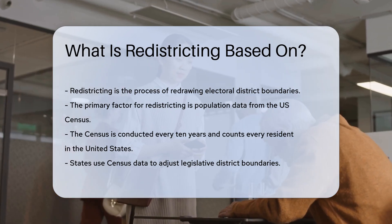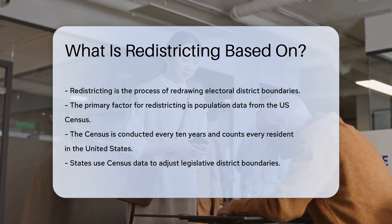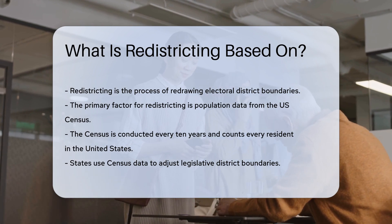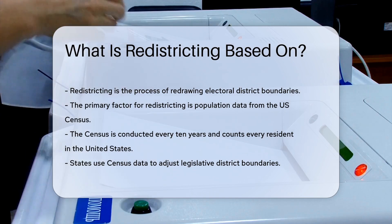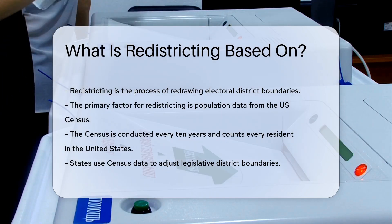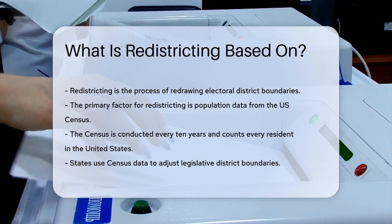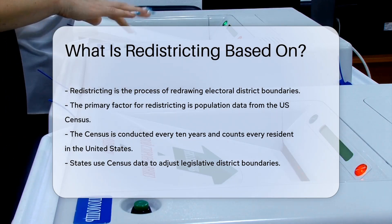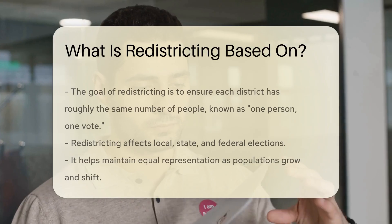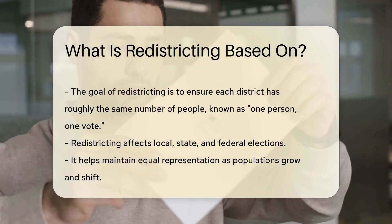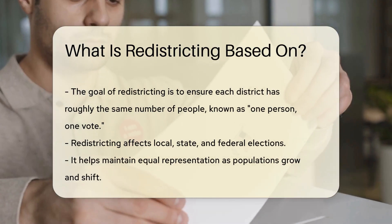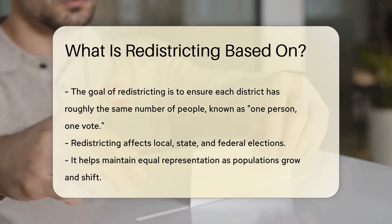The primary factor for redistricting is population data. The U.S. Census, conducted every 10 years, provides this data. The Census counts every resident in the United States. States use this data to adjust the boundaries of their legislative districts. The goal is to ensure each district has roughly the same number of people.